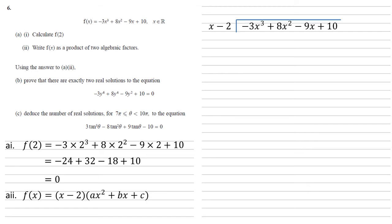To start with, how many x's go into minus 3x cubed? That's minus 3x squared. If we times (x minus 2) by minus 3x squared we get minus 3x cubed plus 6x squared. Taking that away from our original f(x) gives us 2x squared minus 9x plus 10.